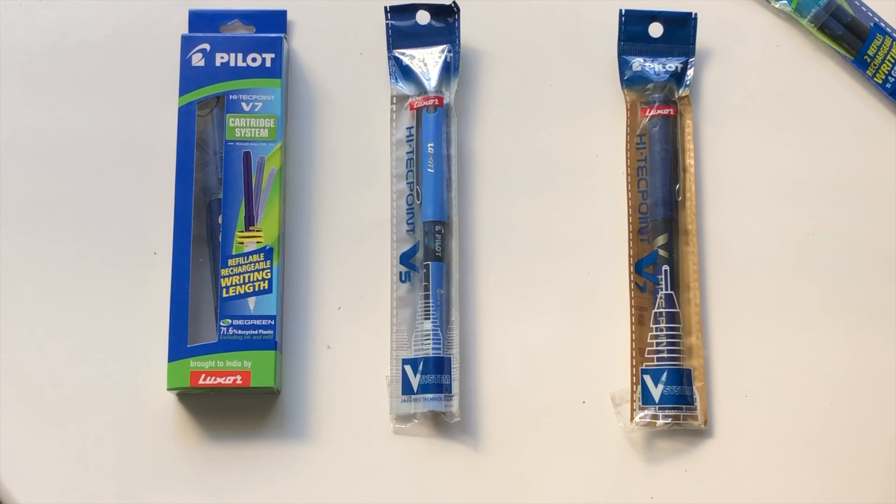This is the Pilot V7, this is the V5, and this is again the V7. Now let's compare two V7s. Actually, there is no differentiation between the V5 and V7 except for the color. I'll just not unbox this; I want to unbox the V5 mainly and this V7. This is what we have right now.